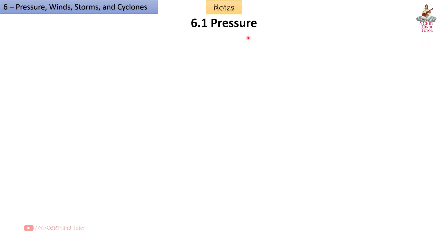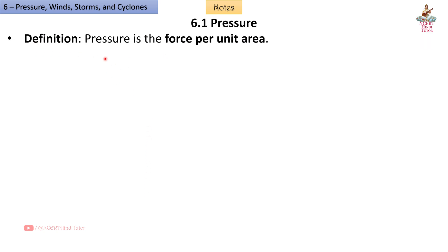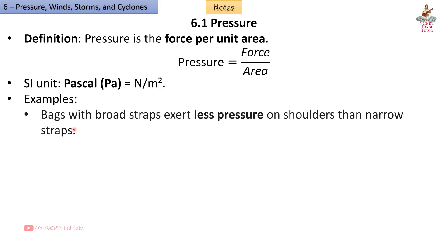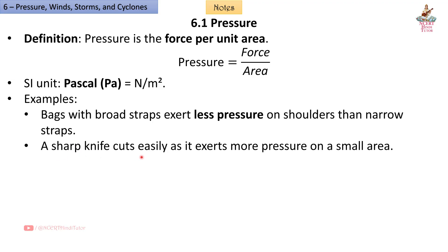6.1 Pressure. Pressure is the force per unit area. Pressure equals force divided by area. The SI unit is Pascal (Pa), i.e., Newton per meter square. Examples: Bags with broad straps exert less pressure on shoulders than narrow straps. A sharp knife cuts easily as it exerts more pressure on a small area.